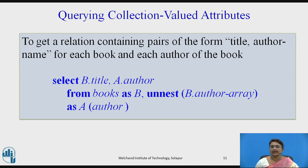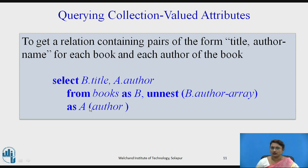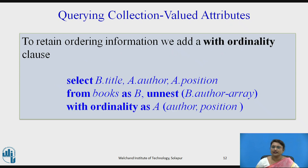Now to get a relation containing pairs of the form (title, author name) for each book — meaning if a book has two authors it will show two tuples with the same title — the query is: SELECT b.title, a.author FROM books AS b, UNNEST(author_array) AS a. The UNNEST automatically takes each element from the array and connects it with the corresponding title.